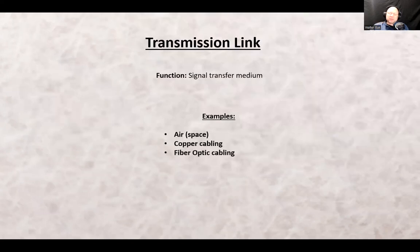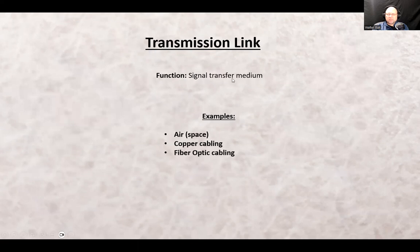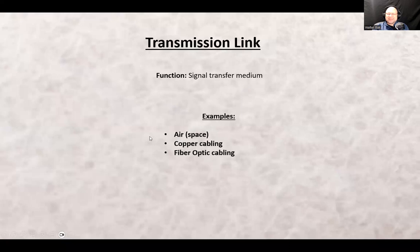Transmission link — we're going to spend time on that over the next 14 weeks. It's a signal transfer medium — an environment for the signal to travel through. We distinguish three types of media we mostly use: air, copper, and fiber. Air: you receive a signal from the air when driving and listening to the radio. Copper is probably the most popular means of signal transportation, used widely all over.